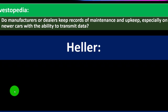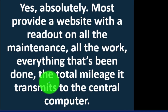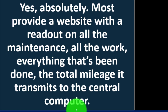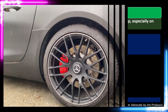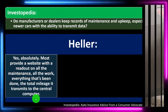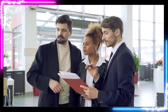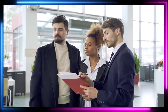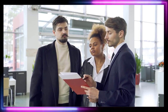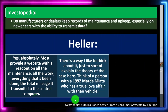Investopedia asking: do manufacturers or lenders keep records of maintenance and upkeep, especially on newer cars with the ability to transmit data? Expert saying: yes, absolutely. Most provide a website with a readout on all the maintenance, all the work, everything that's been done, and the total mileage transmitted to the central computer. If you get maintenance at the dealership, they've got your whole track record, which can be beneficial if there's an accident and you need to prove you've been taking care of the car.